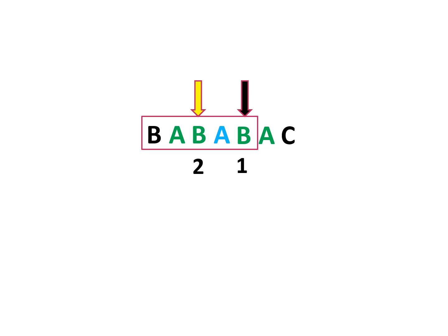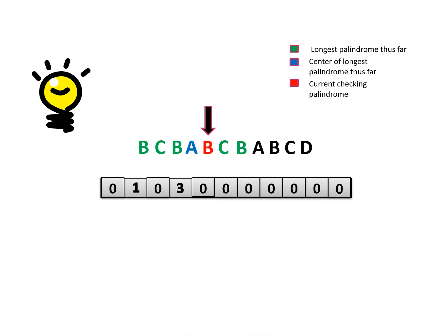Now let's apply what we have learned. We use an additional arrow to point to the mirror. For the first character, the mirror value is 0 and it cannot be expanded, so we move to the next. For the next character, the mirror value is 1, so we start expanding after that value — from the two As outward. We can also cover the two Bs and the two Cs. We have expanded three additional times; combined with the mirror value of 1, we update the array value to 4. This becomes the new longest palindrome.